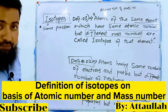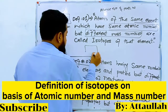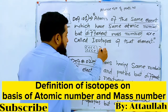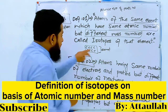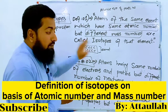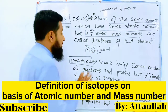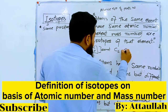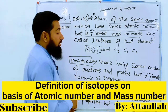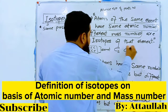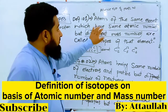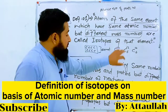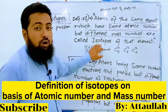Atoms of the same element — for example, carbon. Carbon has the same atomic number, which is 6 for all its isotopes. But the atomic mass is different: 12, 13, and 14. The atoms have the same atomic number, but different mass numbers. Then we have isotopes.